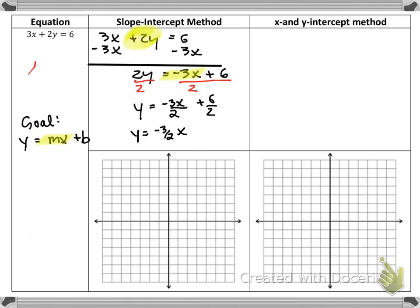So we get Y is equal to negative 3X over 2 plus 6 over 2. We rewrite that as Y equals negative 3 halves X plus 3. And then we can graph this. So notice that our slope is negative 3 halves, and our Y-intercept is 3.